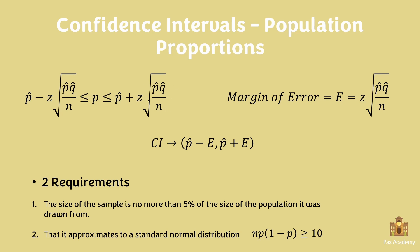We can deconstruct this formula slightly. We can see that z times the square root of p-hat times q-hat over n is called the margin of error. As you can see, this is on both sides. Therefore, if we substitute this whole thing for e — margin of error — we get the confidence interval, which is p-hat minus the margin of error, comma, p-hat plus the margin of error. This would be our confidence interval, where this is the lower bound and this is the upper bound.